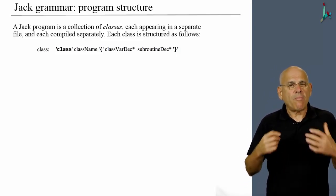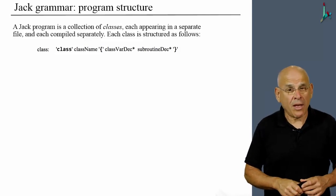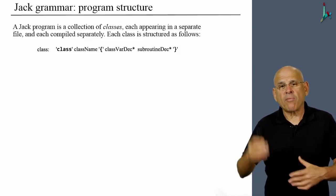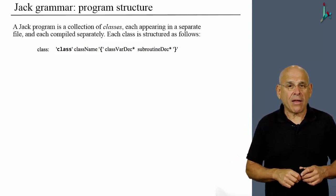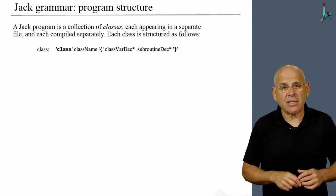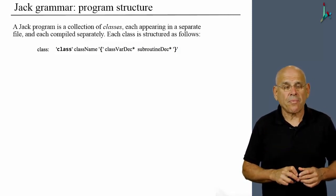And then we may have zero or more subroutine declarations followed by a right curly bracket. So that's what it takes to be a class in Jack.